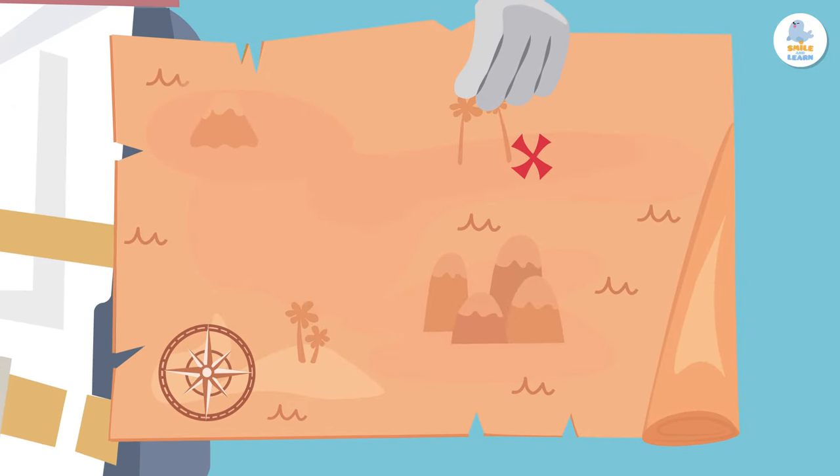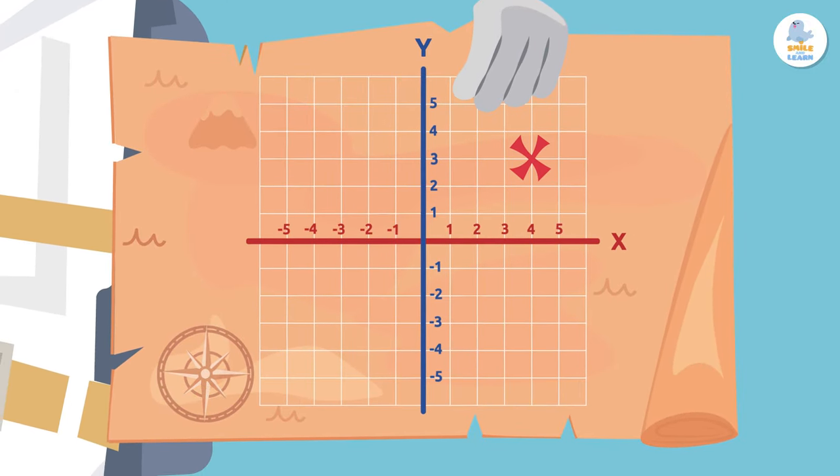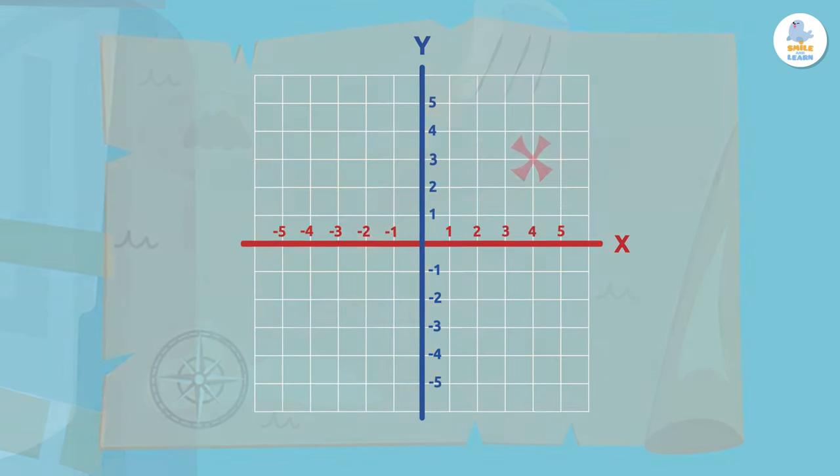To read this map, we have to know about the Cartesian coordinate system. It's the system we use to represent points on a plane.